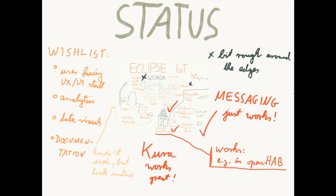In terms of status, it has to be admitted that some Eclipse IoT projects are still a little rough around the edges — that concerns projects like Vorto, Hawkbit, or HONO. Things like Eclipse Kura, which collects information on a hub, or Eclipse Smart Home, which is already an entire solution for the smart home arena, just work. Messaging just works. On my wishlist for Eclipse IoT would be more components for user-facing UX and UI, tools for data analytics and data visualization, and in many cases improvements in documentation for end users. Unfortunately I haven't used any of the offerings around industrial IoT, so I can't really comment on those.